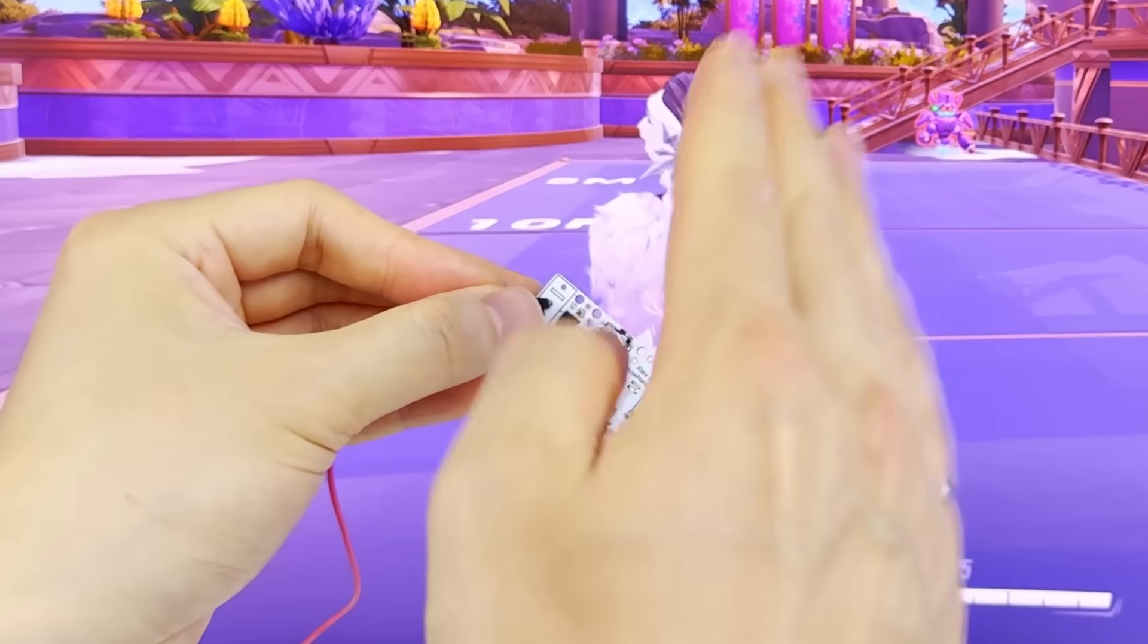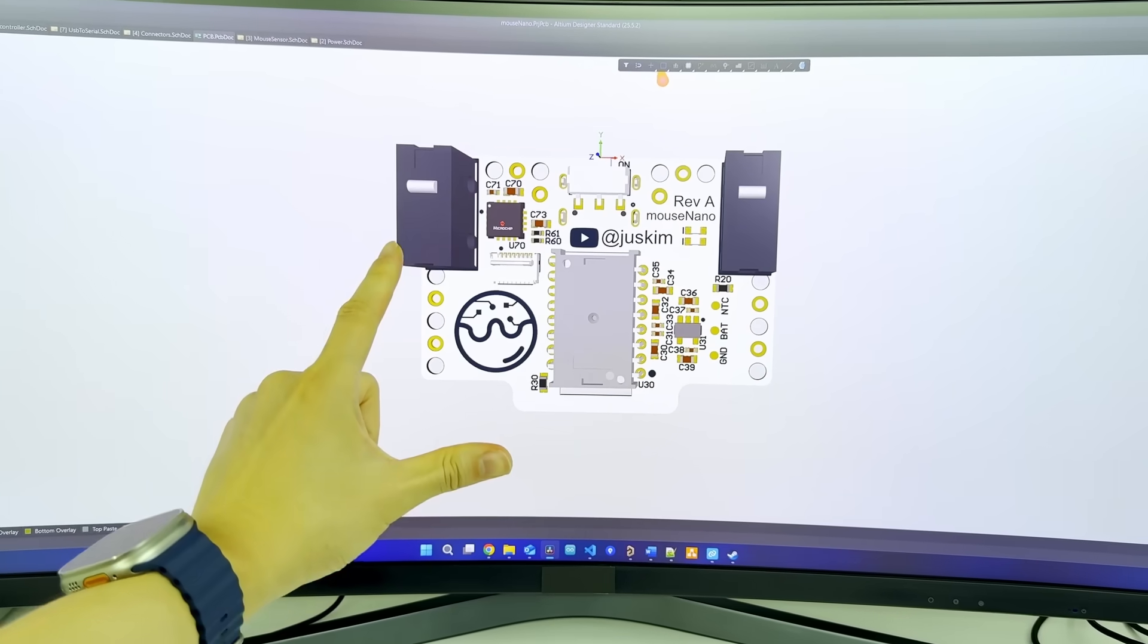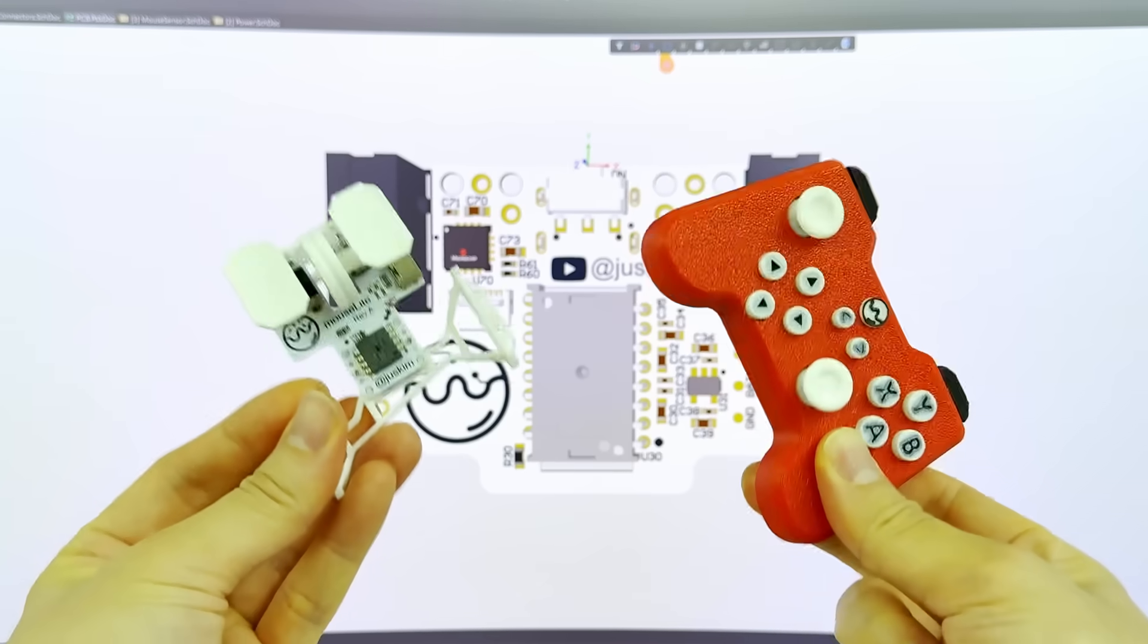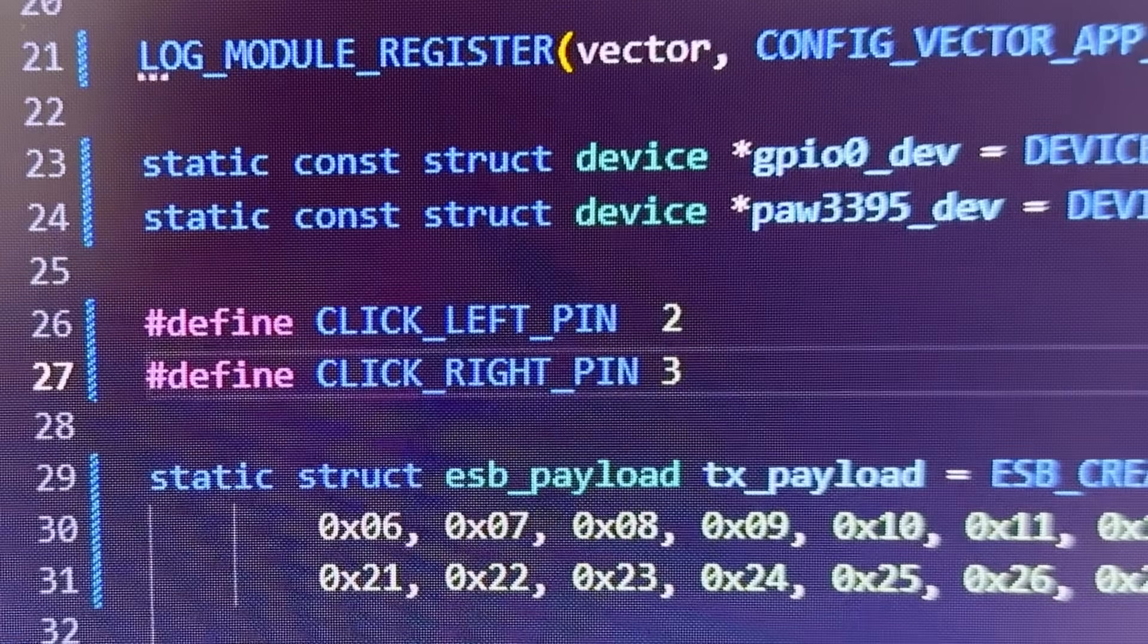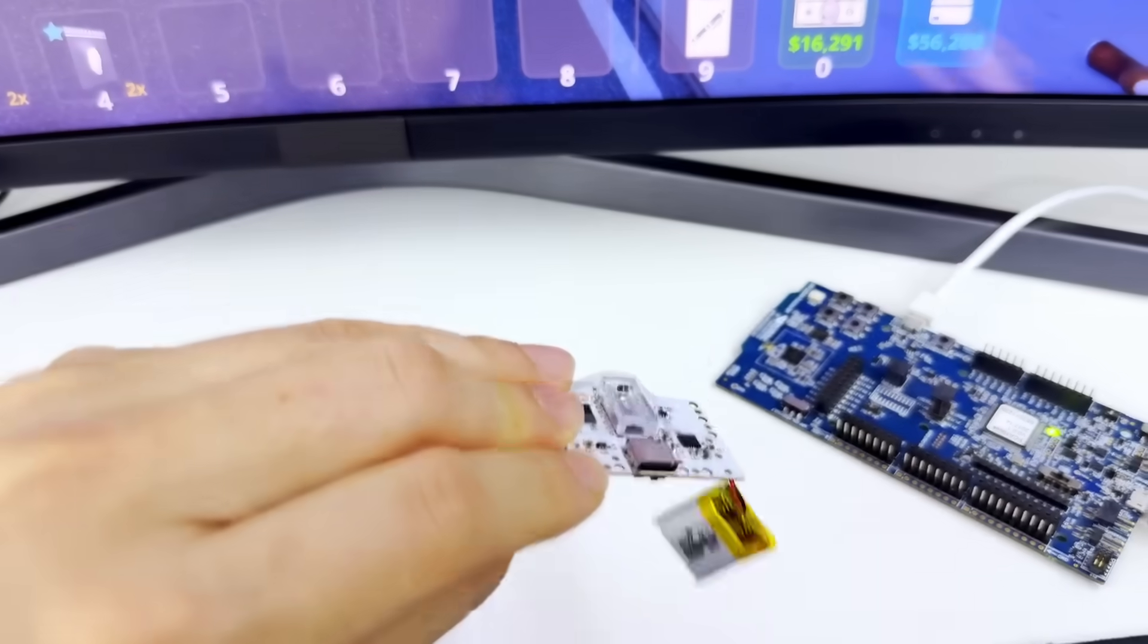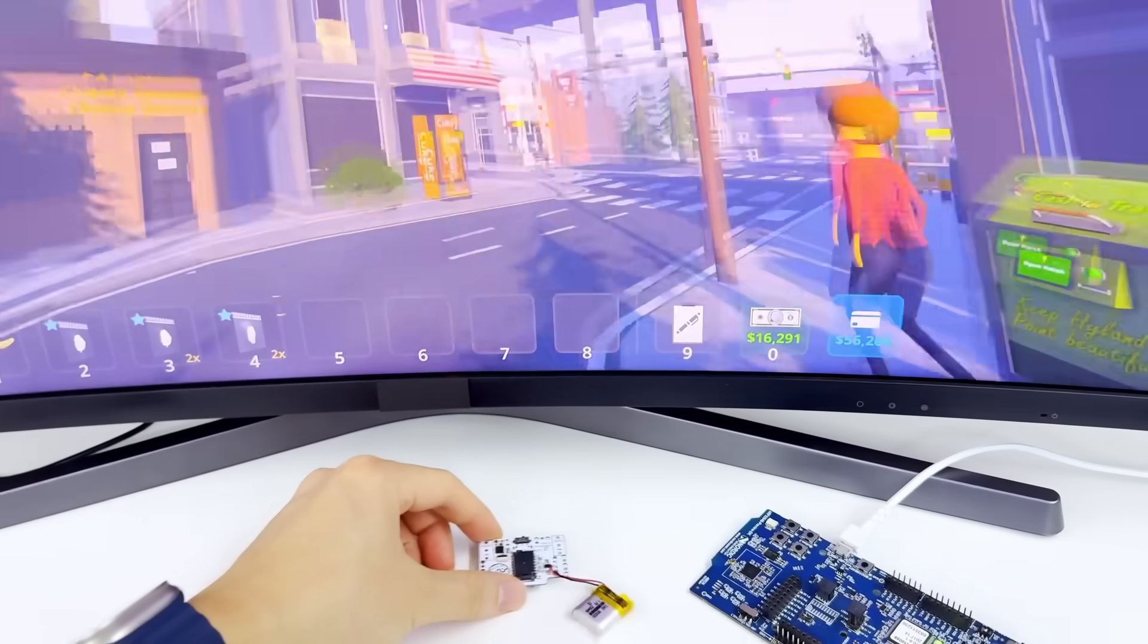And of course, I mixed up the left and right switches. I swear this is not a scripted bit for a joke. I seem to have an issue remembering which side is left and which side is right. It's the same mistake for all my past projects. Luckily, the mix-up is a simple fix in the firmware. And with that, our world's smallest gaming mouse circuit board is complete.